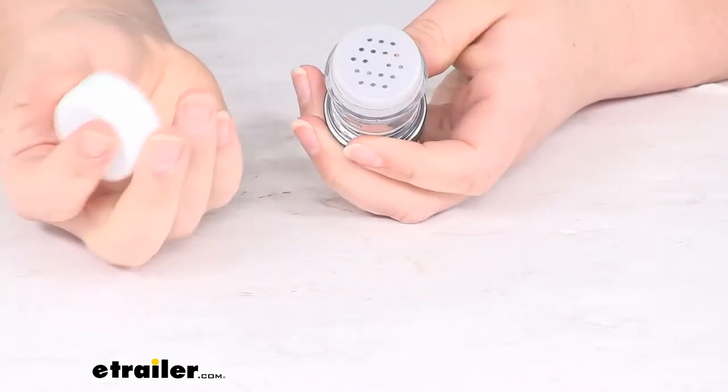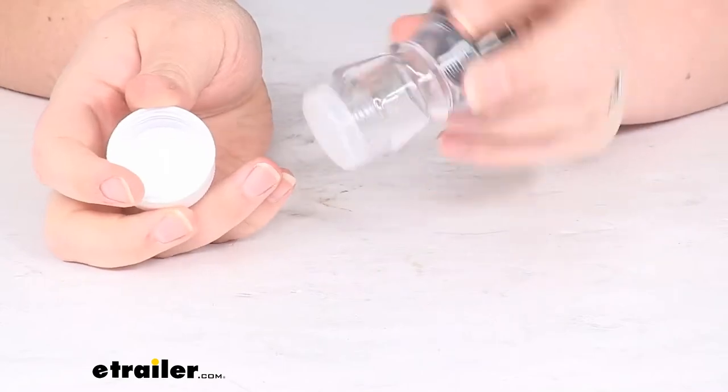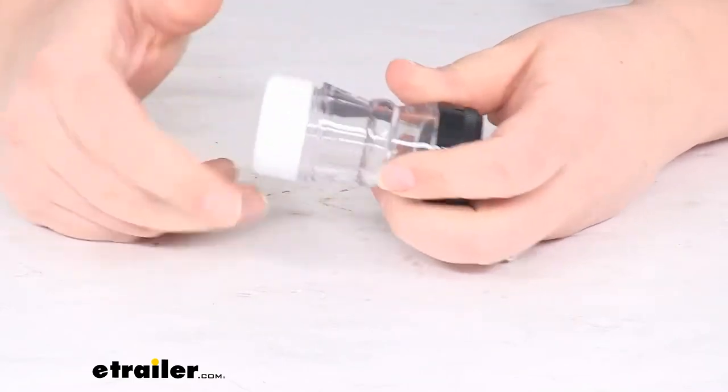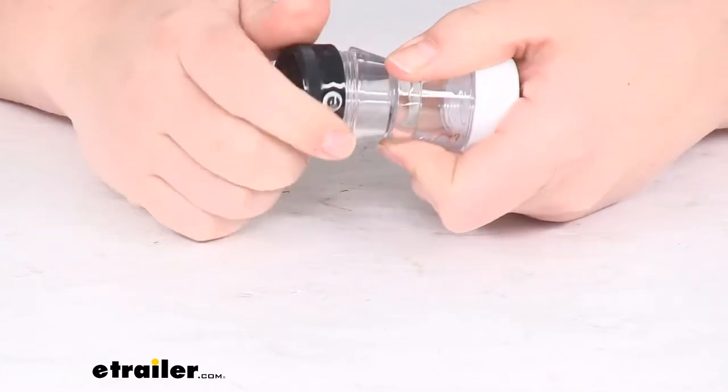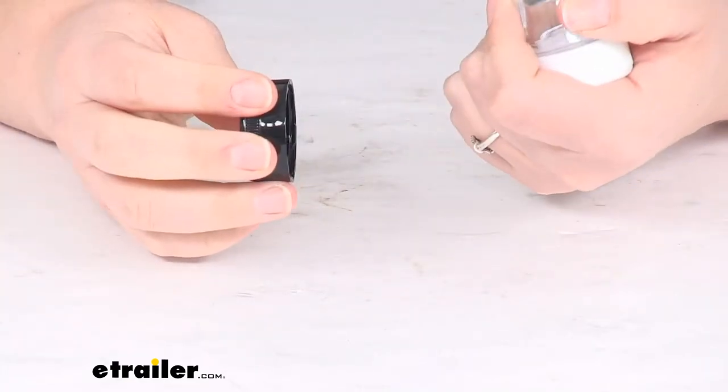So either side is going to have a little screw cap. You can shake out as much salt as you need, and then the other side can shake out your pepper. So you got salt and pepper with you wherever you go.